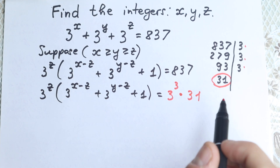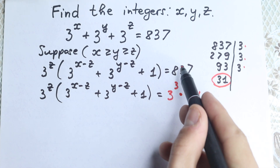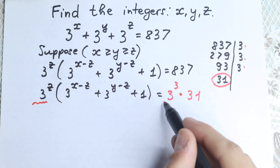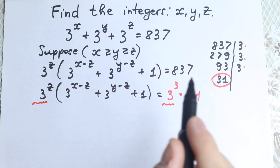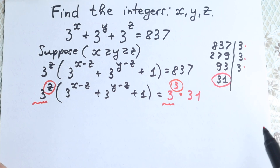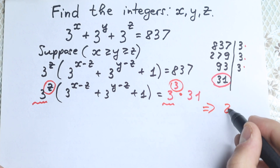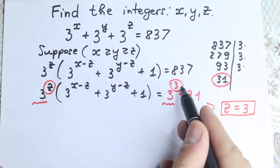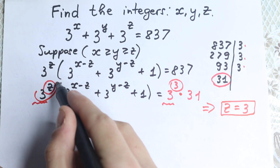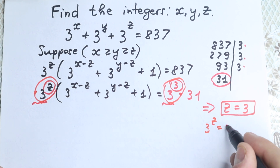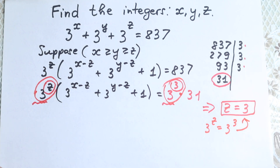Now, the best way to solve this kind of expression is to match the bases. We have 3 to the power z on the left and 3 cubed on the right. So z equals 3 — this is the general solution to our first step. From the first step we have z equal to 3.